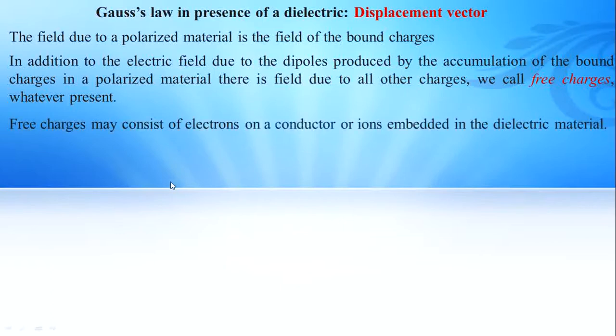Free charges may consist of electrons on a conductor or ions embedded in the dielectric material. So the total charge density rho is equal to rho_b plus rho_f, where rho_b is the bound charge and rho_f is the free charge, if any is present.